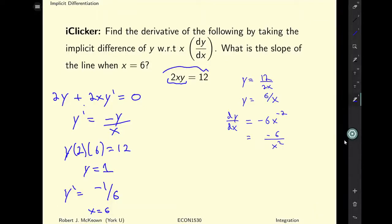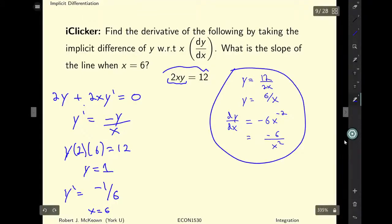That was the implicit differential. Now let's use the explicit derivative that we found. This is y prime in Leibniz notation. And so using that, we've got y prime is equal to negative 6 over 6 squared, which is equal to negative 6 over 36.